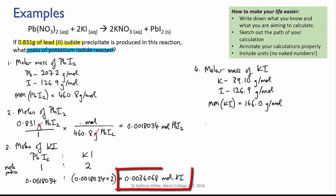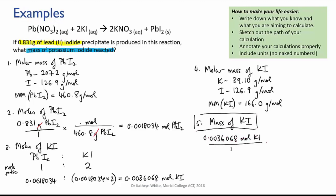Now we convert the 0.003608 moles of KI to a mass by multiplying by the molar mass which gives us 0.59873 grams which rounds to 0.599 grams of potassium iodide and that's our final answer.